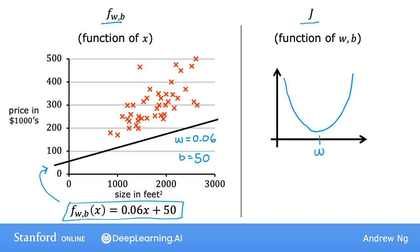Now, in this housing price example that we have on this slide, we have two parameters, w and b. And so the plot becomes a little more complex.